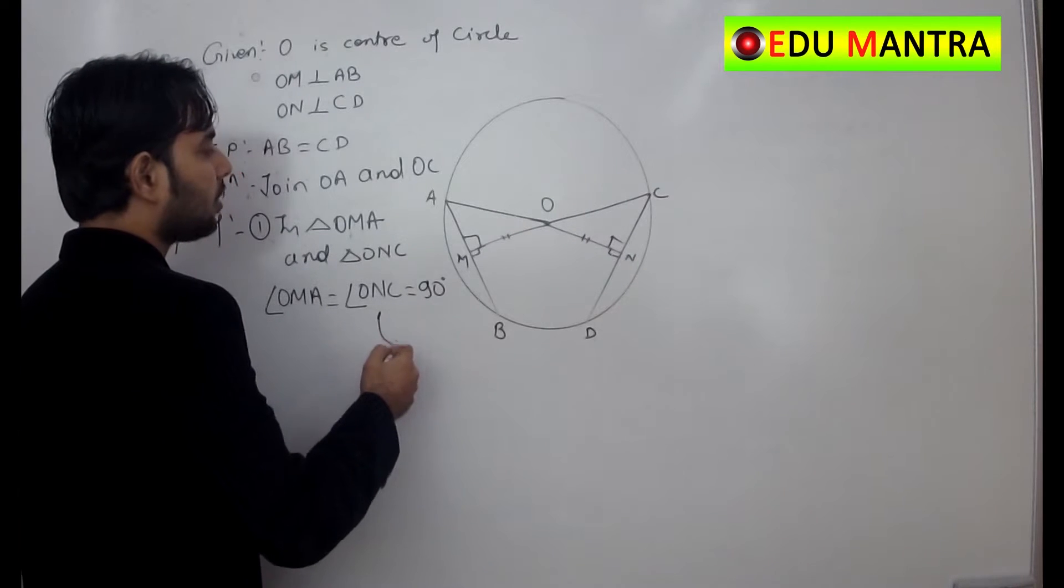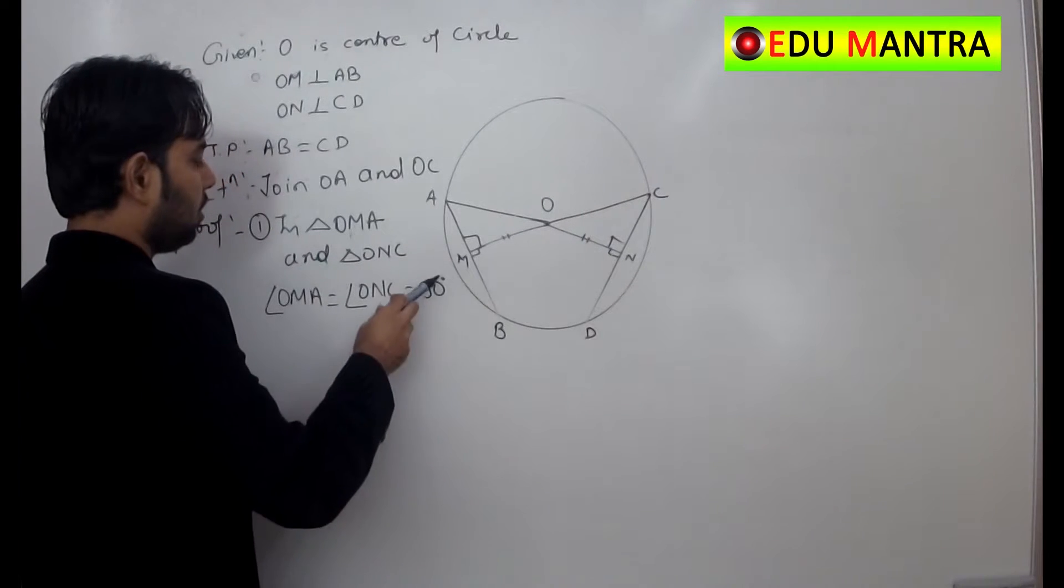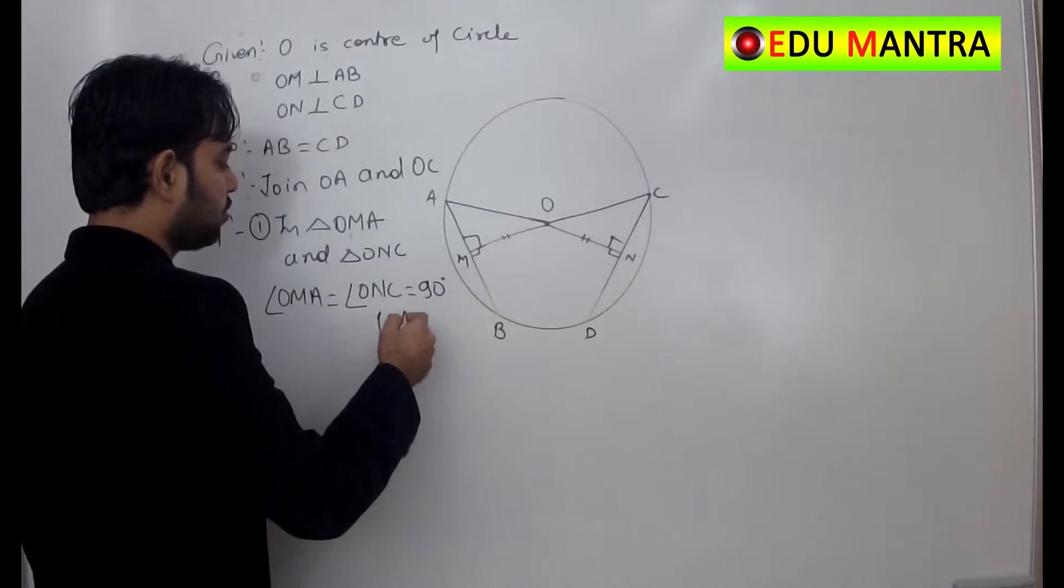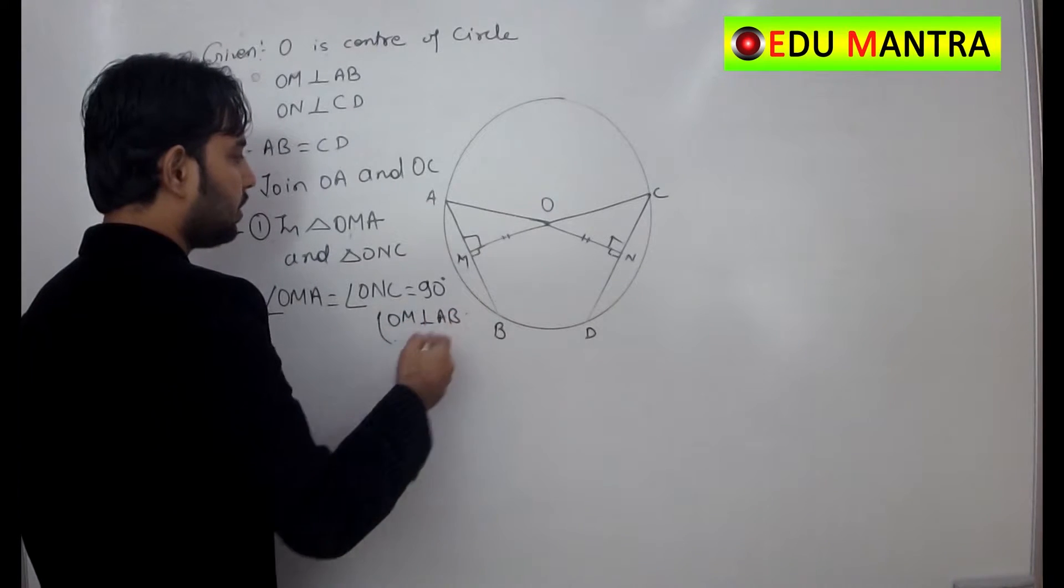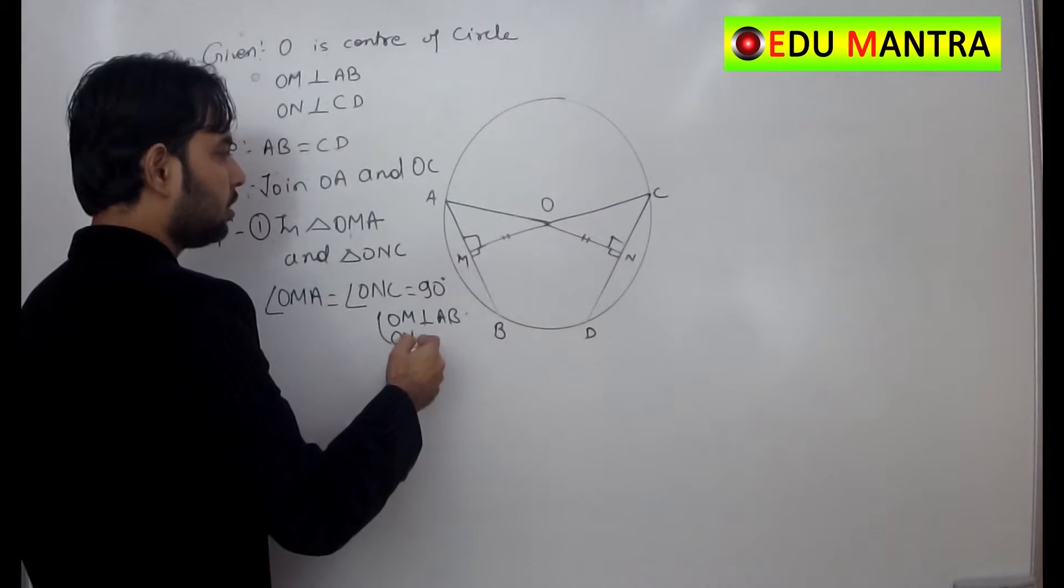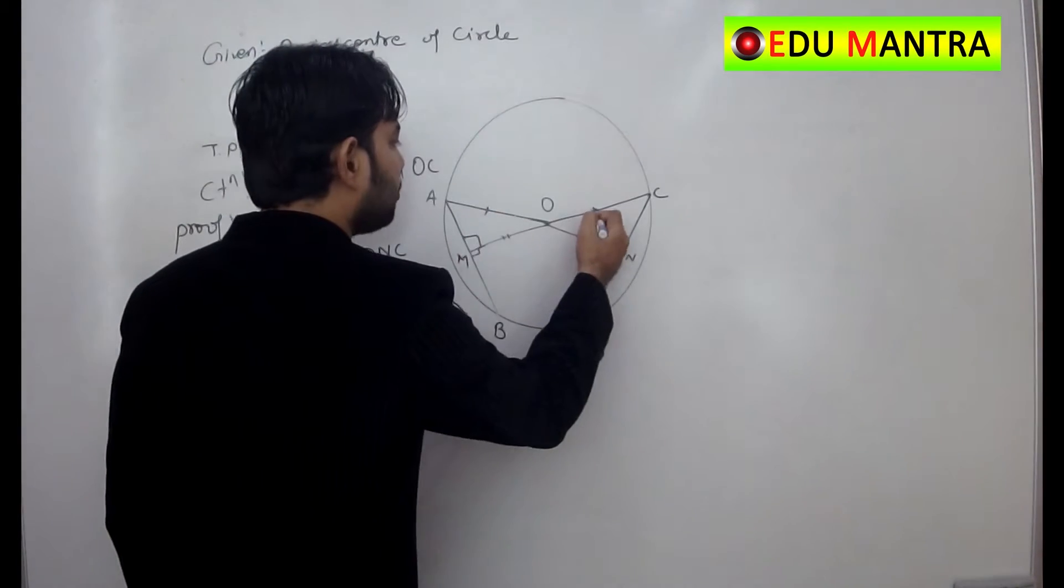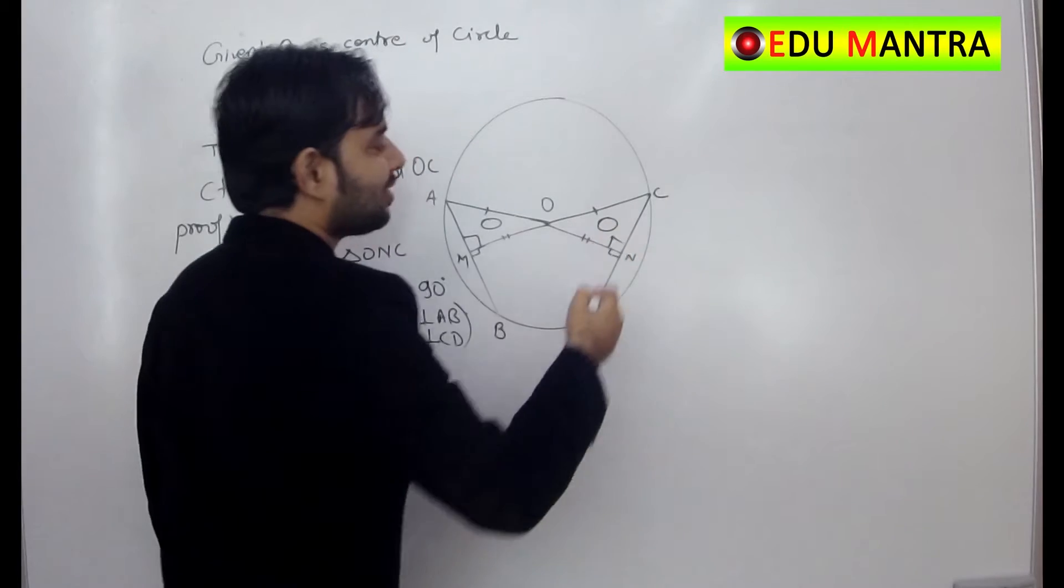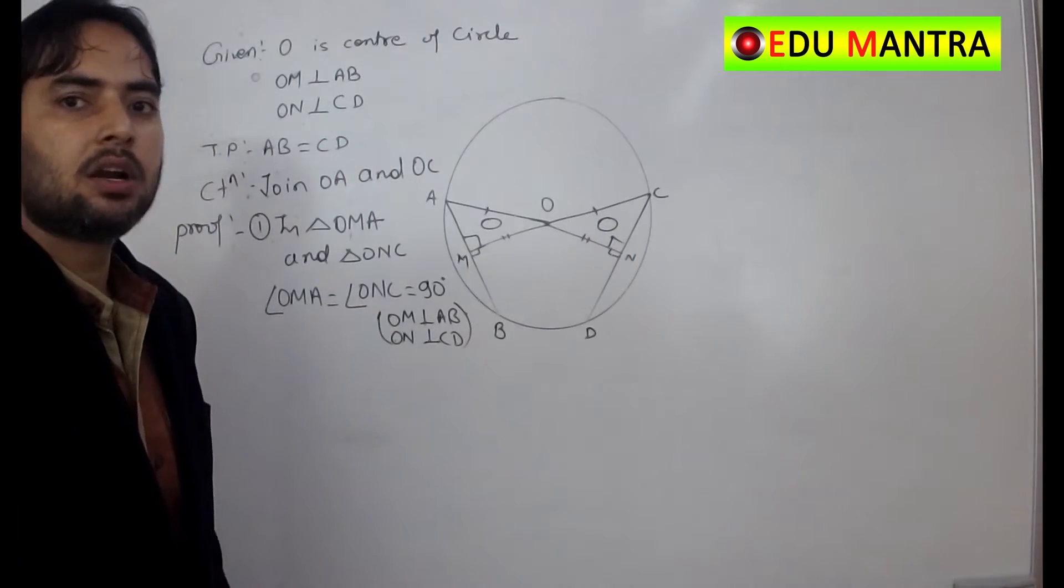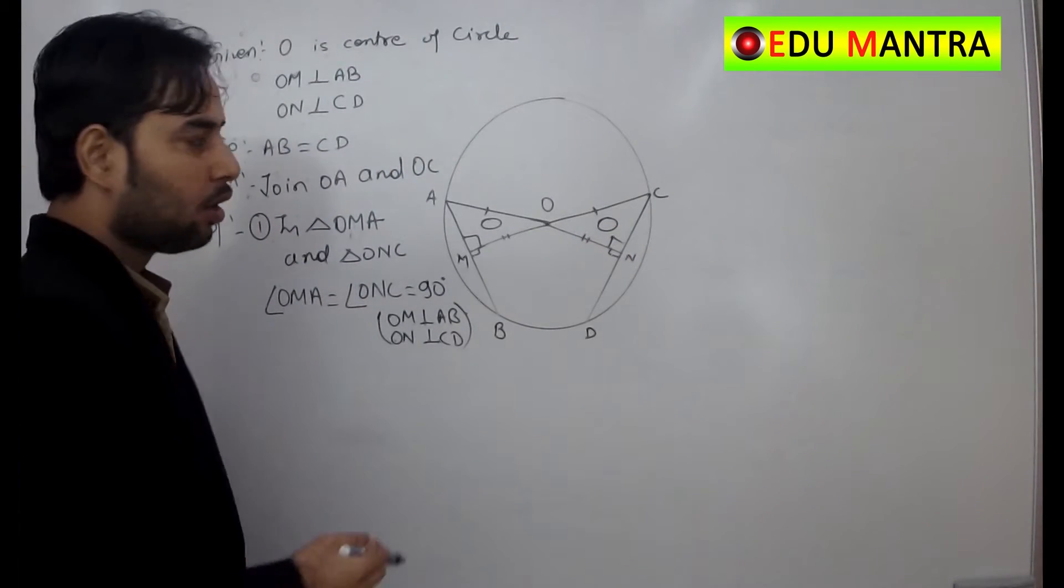Then what is the reason? Because OM is perpendicular to AB and ON is perpendicular to CD. Then this hypotenuse for both these triangles are radii for the circle, so they will be equal.